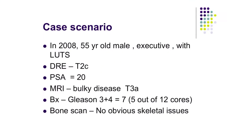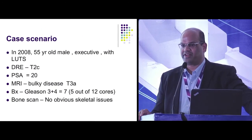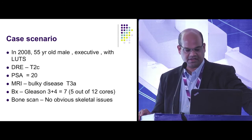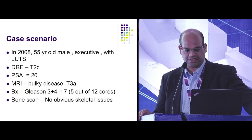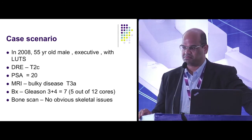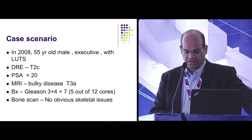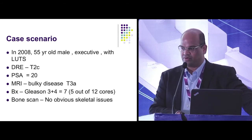A 55-year-old fit gentleman who has three risk factors: he has T2C disease, PSA of 20, and bulky disease — not high-grade Gleason, but Gleason 3 plus 4. What do you do?